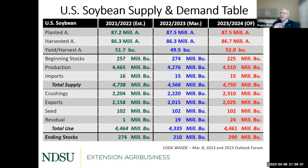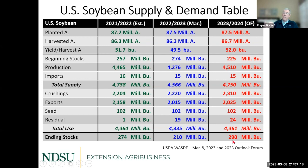For soybeans, USDA is basically saying flat — no increase in planted acreage, though private forecasters suggest maybe a million to a million and a half acre increase. Based on USDA's projections of about the same plantings as last year, with a trend line yield of about 52 bushels per acre, total production would be a little bit higher than 2021. Total consumption is forecast nearly identical to 2021 with strong export pace and crushing demand, so we're looking at a slight increase in inventories, assuming normal weather conditions.